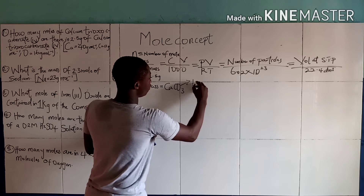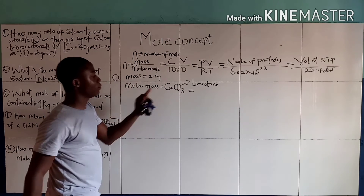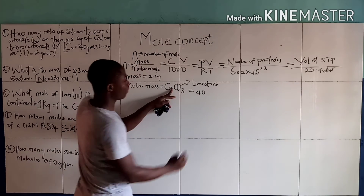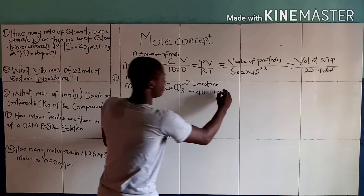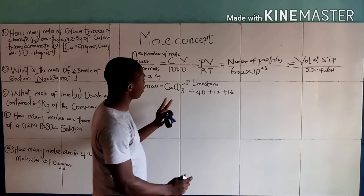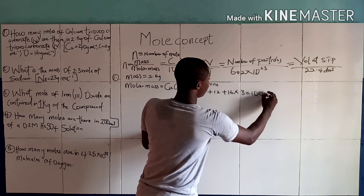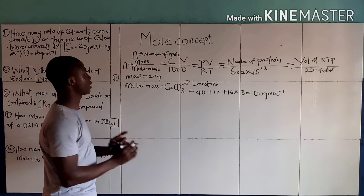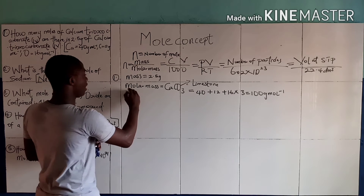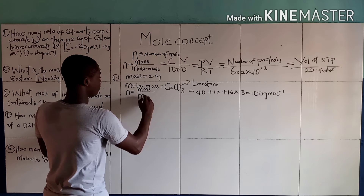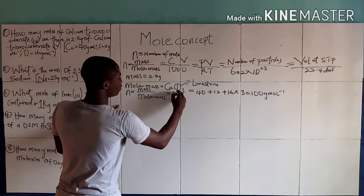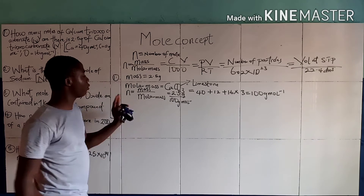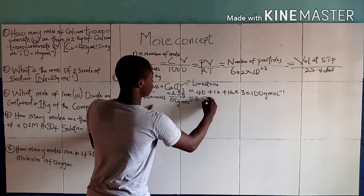The molar mass of calcium is 40, the molar mass of carbon is 12, and the molar mass of oxygen is 16. Since we have three atoms of oxygen, it will be 16 times 3, making the molar mass 100 grams per mole. Now, N equals mass over molar mass, which is 2.5 over 100, giving us 0.025 moles.